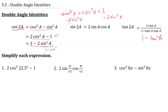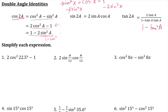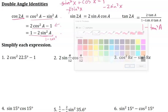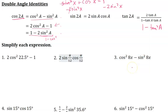Using these identities, let's simplify some expressions. For each one, I recommend identifying what a is or what 2a is, depending which way you're going. When I see 2 cosine squared of an angle minus 1, that matches the second form with a equal to 22.5 degrees. So this equals cosine of 2 times 22.5, which is 45 degrees. Cosine of 45 degrees is 1 over root 2, or root 2 over 2.